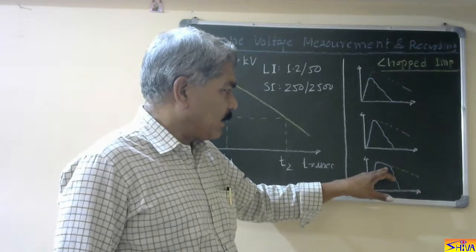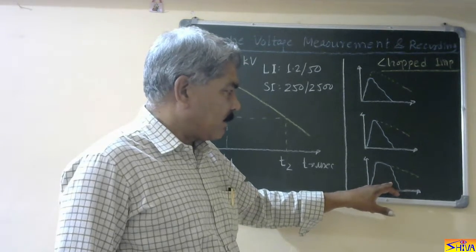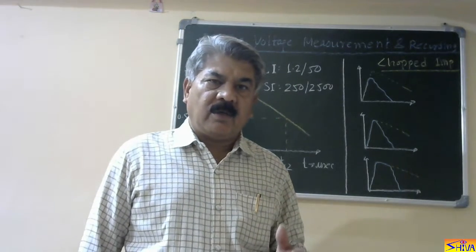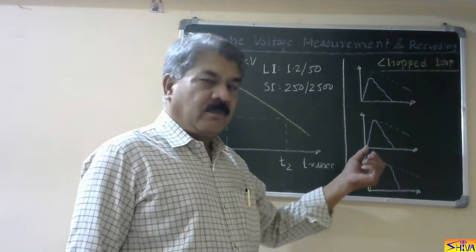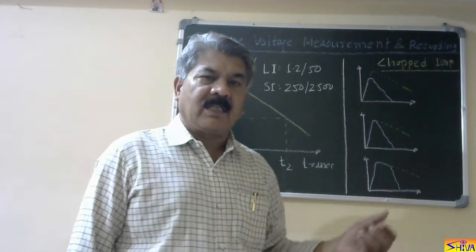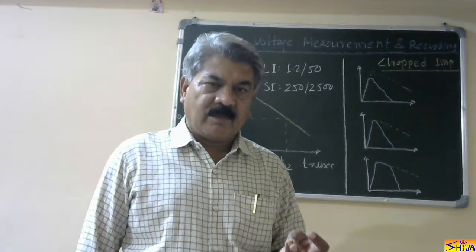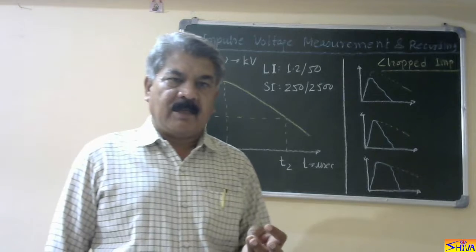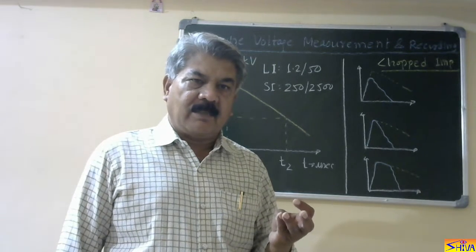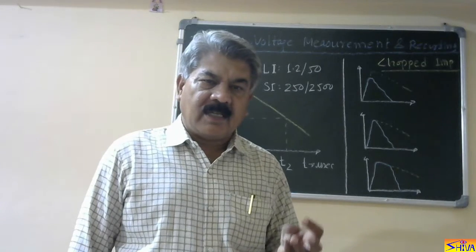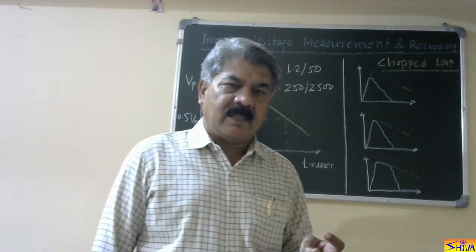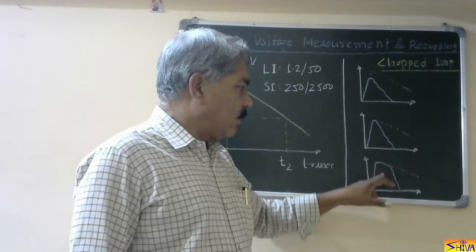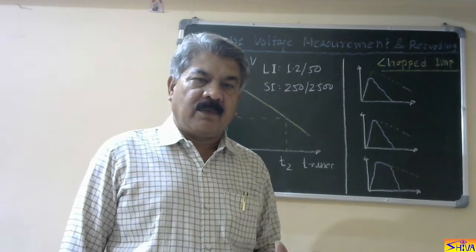So it has collapsed. Here it has taken place on the wave tail — it has collapsed. So in order to know the flash over point, spark over point, or the breakdown point on the impulse wave or the test object, it is necessary to record the impulse wave. First thing is, if flash over or spark over or breakdown does not take place, we must know whether the impulse wave is as per specification or not. Second thing is, if flash over of the object has taken place, then we must know the point of flash over — whether it is on the wave front, the peak value, or the wave tail. Therefore, recording of the impulse wave is necessary.